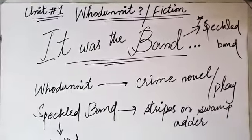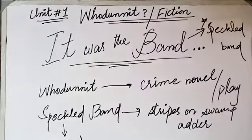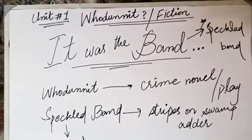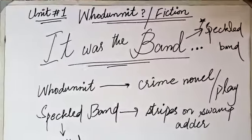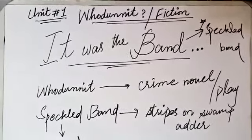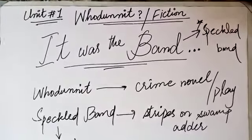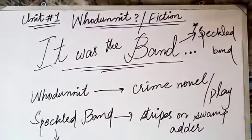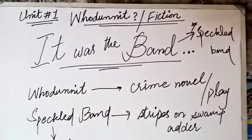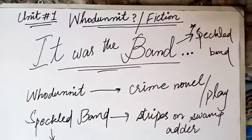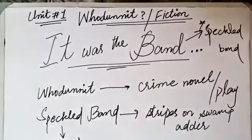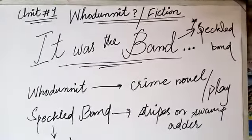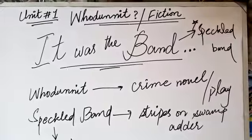I already gave you a brief description about what fiction and non-fiction is. Fiction is something imaginary and that is not real. On the top of the title you can see there is written 'Who done it?' — it is actually a crime novel or play in which the murderer is not revealed.